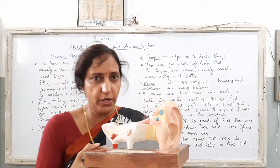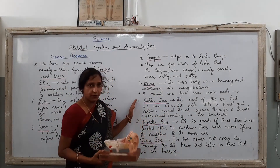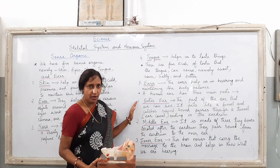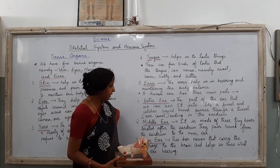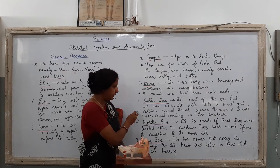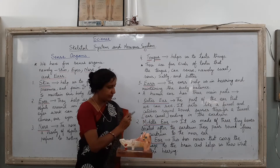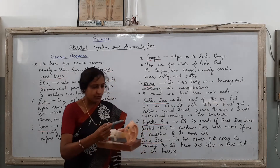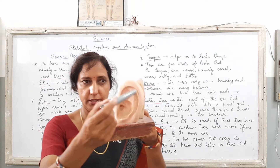Now, children, moving on to the next, first you should know what are the functions of the outer ear. The part of the ear that we can see acts like a funnel and catches sound, and the sound passes through the tunnel ending in the eardrum. This is how the sound is entering through the outer ear.